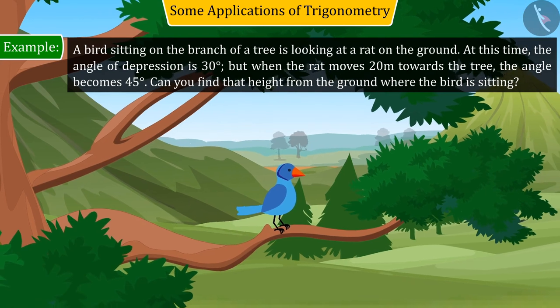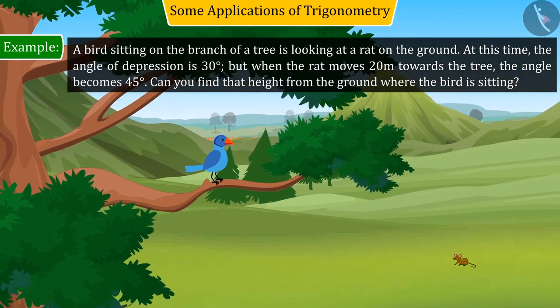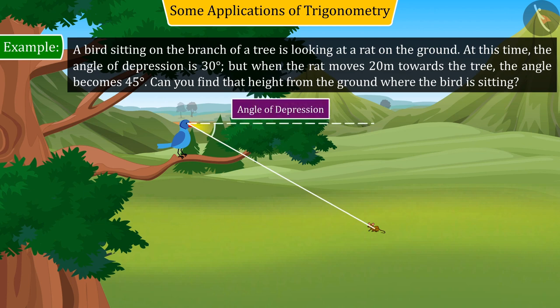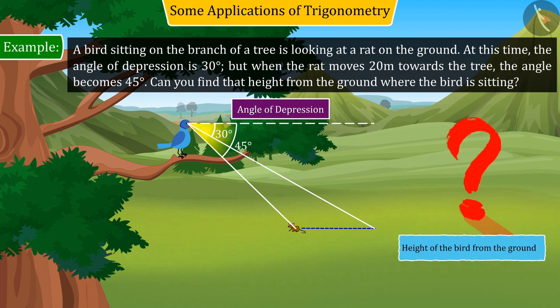A bird sitting on the branch of a tree is looking at a rat on the ground. At this time, the angle of depression is 30 degrees. But when the rat moves 20 meters towards the tree, the angle becomes 45 degrees. Can you find that height from the ground where the bird is sitting?